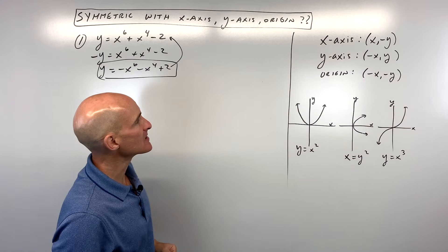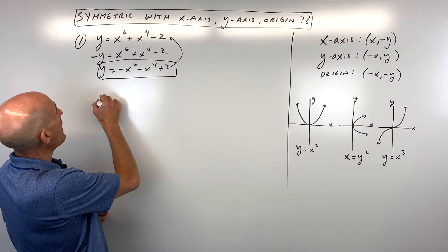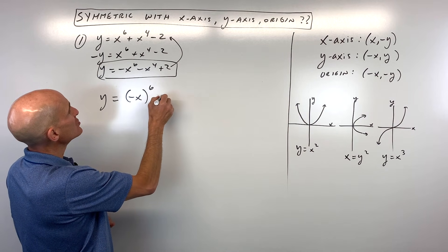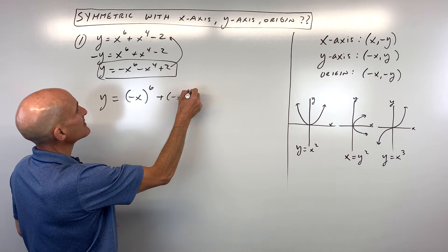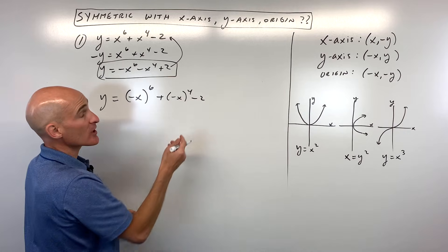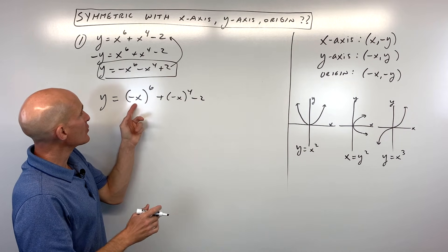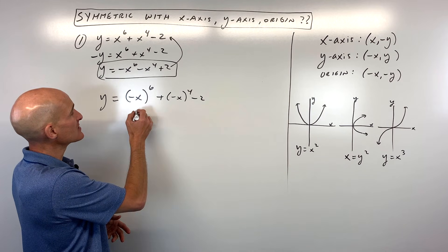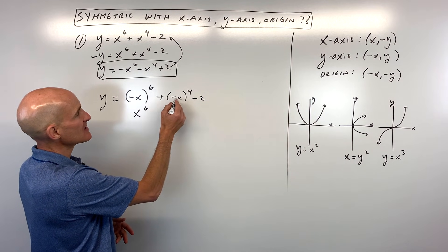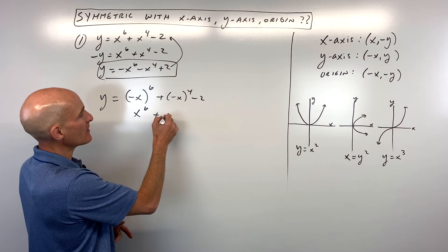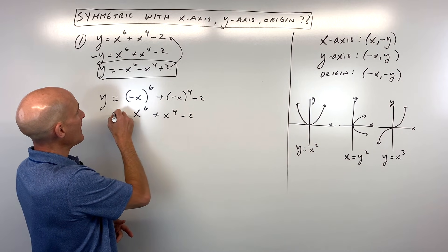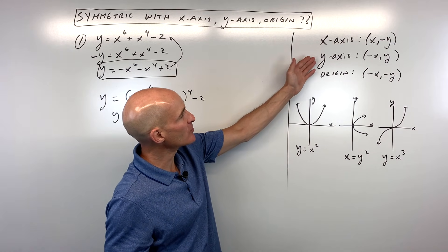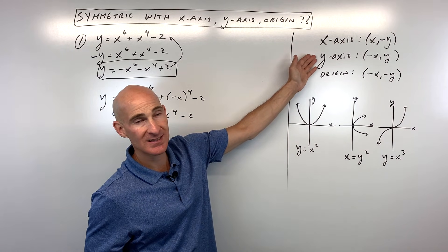Let's do the y-axis test. We're replacing y with y and x with negative x. When you do the substitution, put negative x in parentheses and treat it like a group. A negative times a negative times a negative — six times — gives us positive x to the sixth. A negative to an even power is positive. It looks like we're getting the exact same equation, so it is symmetric with respect to the y-axis.